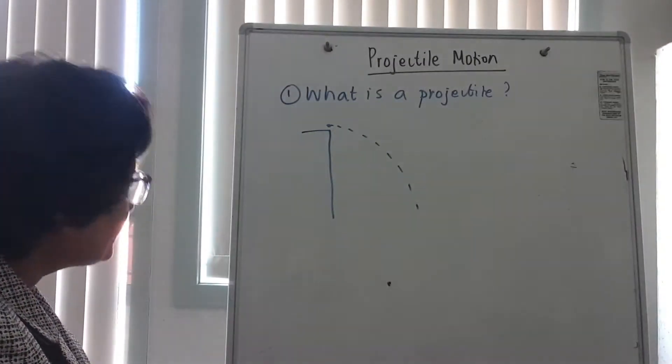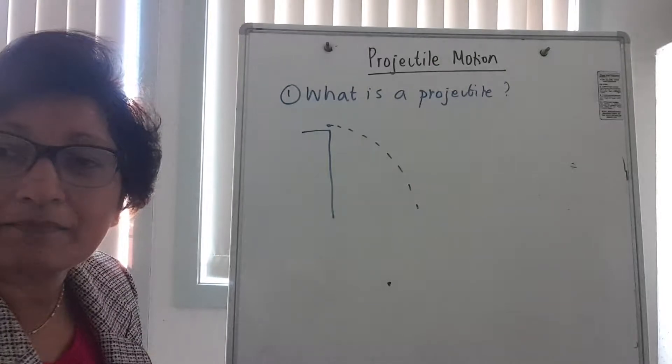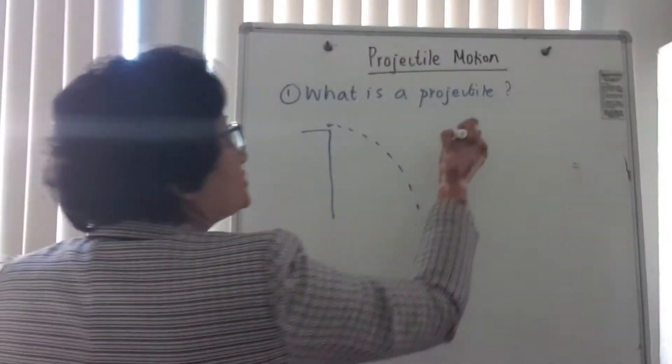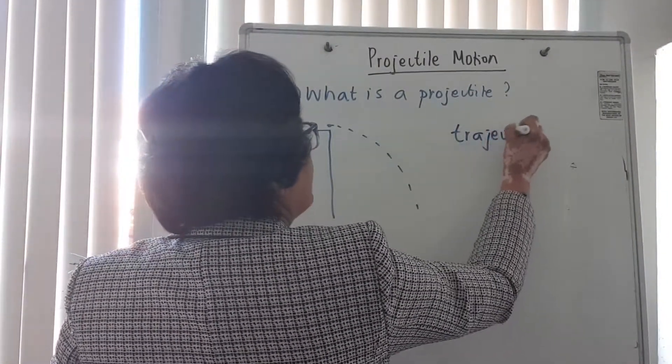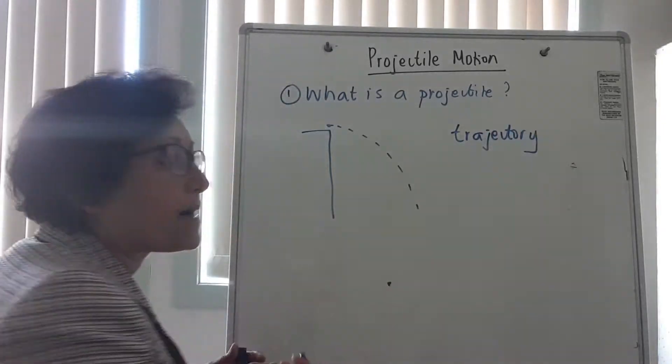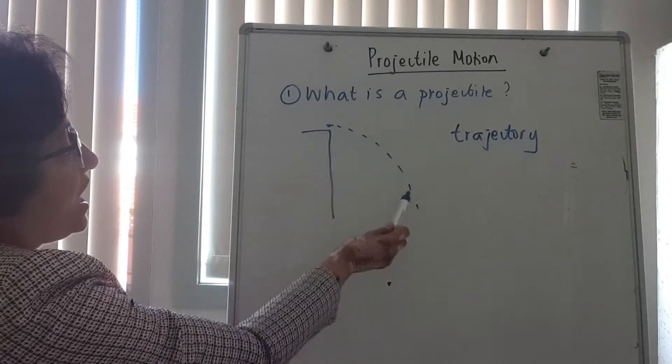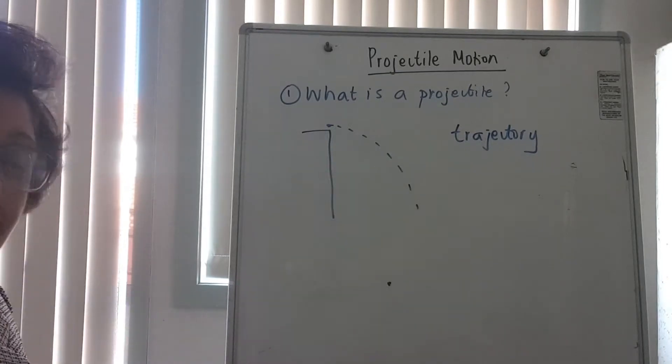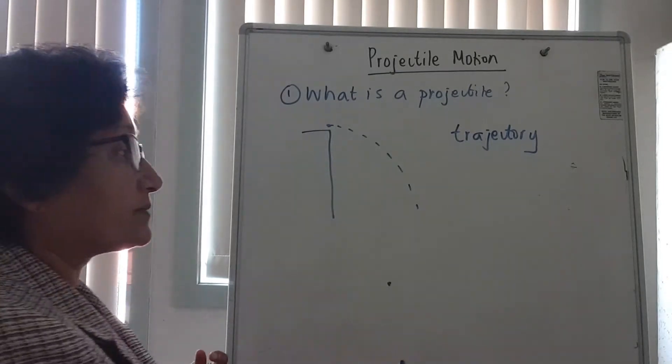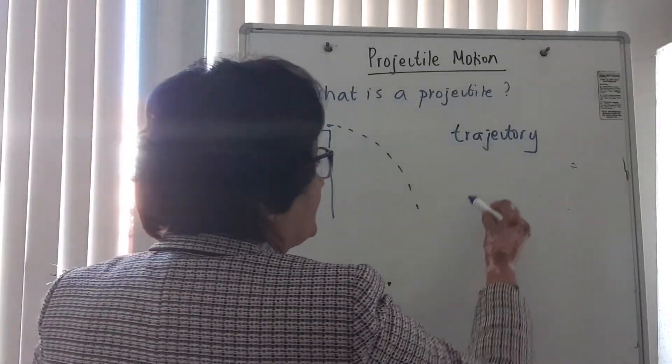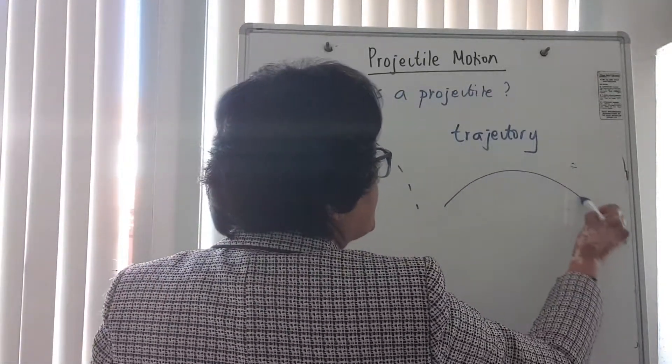So the path that is taken by a projectile, this is only really half a projectile. But if you kick a soccer ball from the ground and it lands on the ground, its trajectory is going to be that of a parabola.